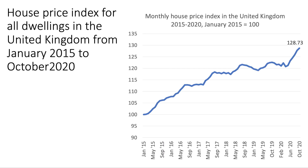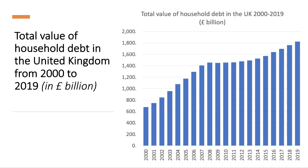House prices have gone up since the start of 2015. This index of house prices has gone up from 100 to 128.73 by the end of October 2020 — nearly a 30% increase in average UK house prices from January 2015 through to autumn 2020, including the pandemic period. The level of household debt, most of which is mortgages, is now much higher than 20 years ago — over £1.8 trillion, approaching £2 trillion.